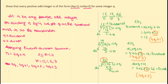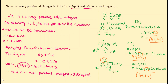Since n is a positive odd integer, we discard the even forms 4q and 4q + 2. Therefore, any positive odd integer must be of the form 4q + 1 or 4q + 3.